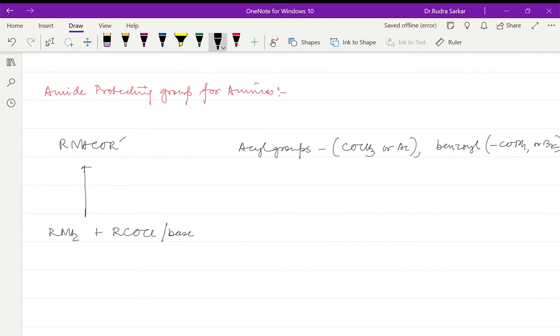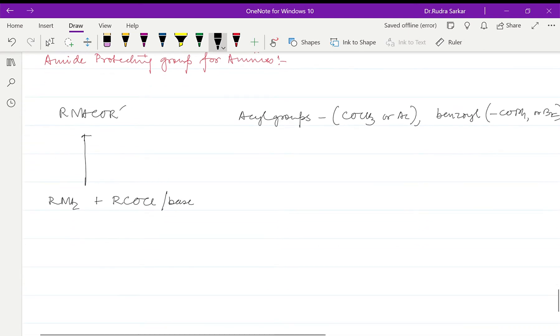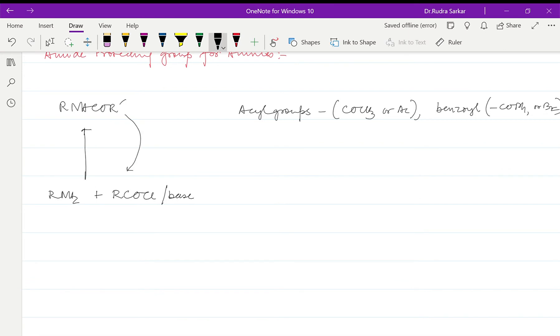They can be easily deprotected by using the hydrolysis strategy. If you want to deprotect them and regenerate our desired amine, we will be using acidified water in presence of heat.